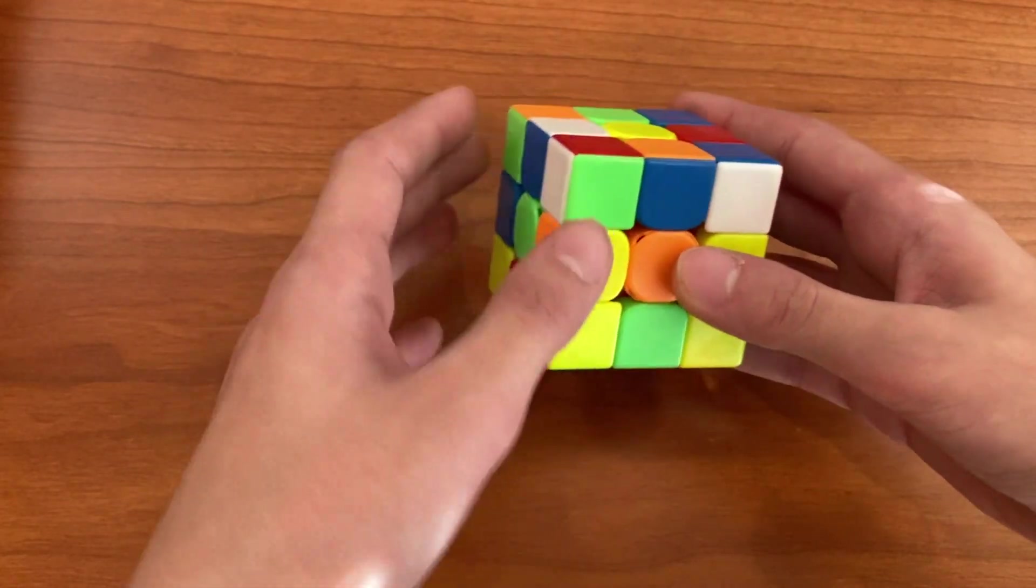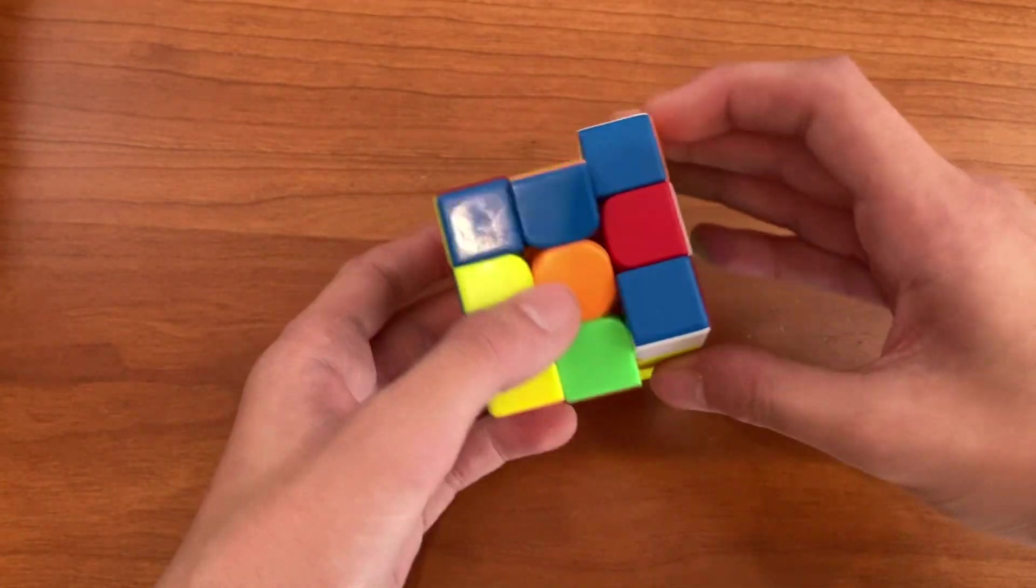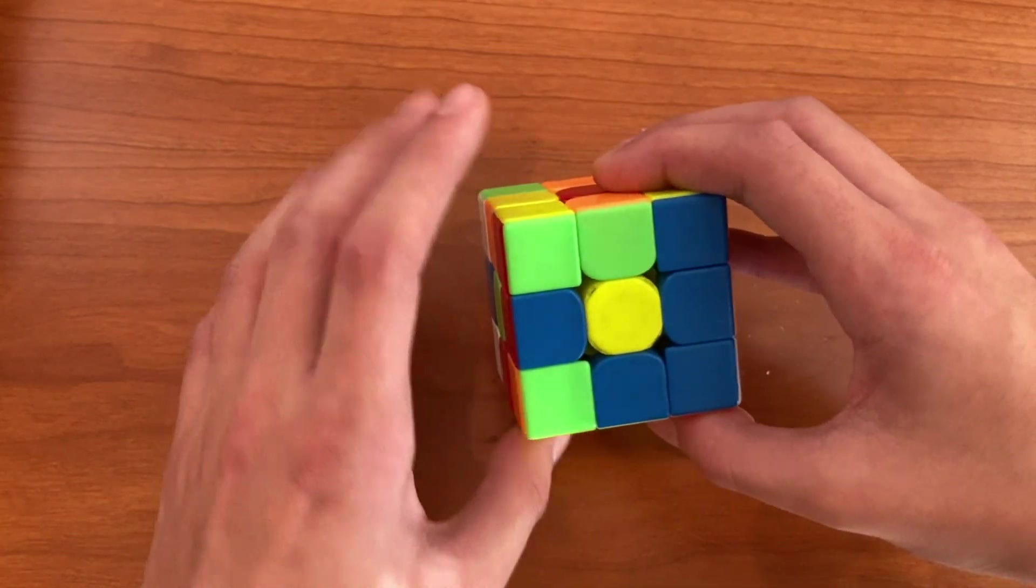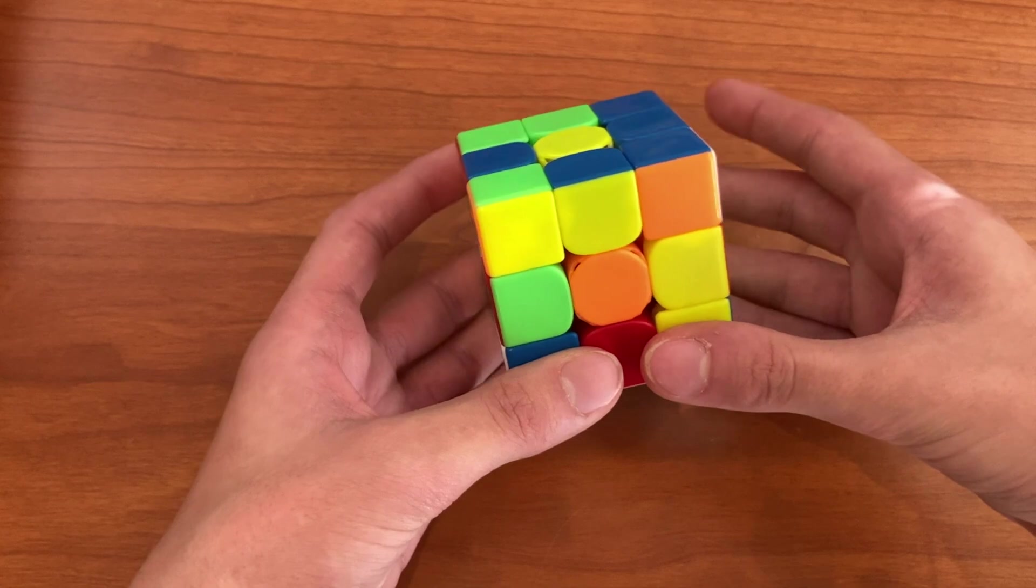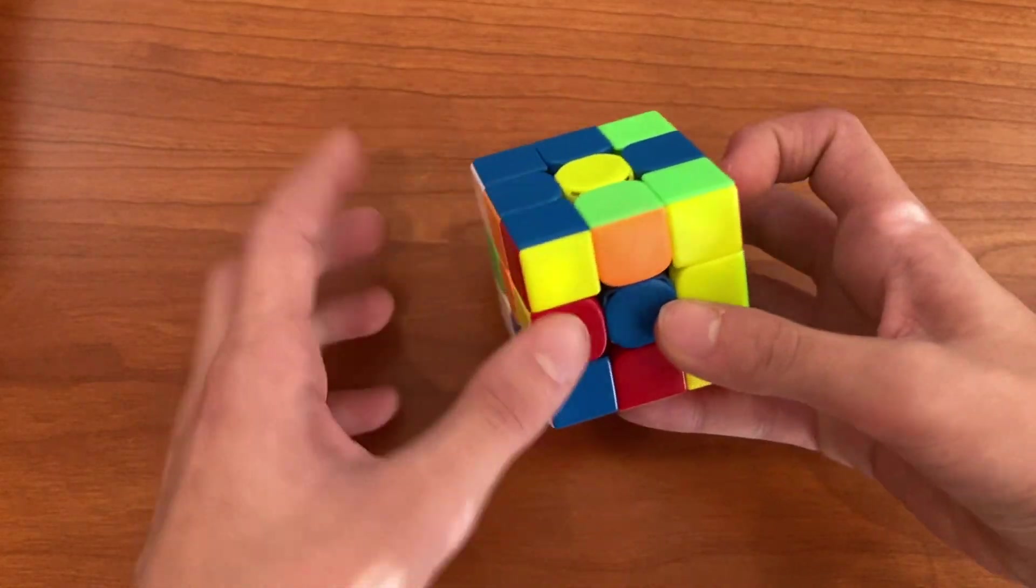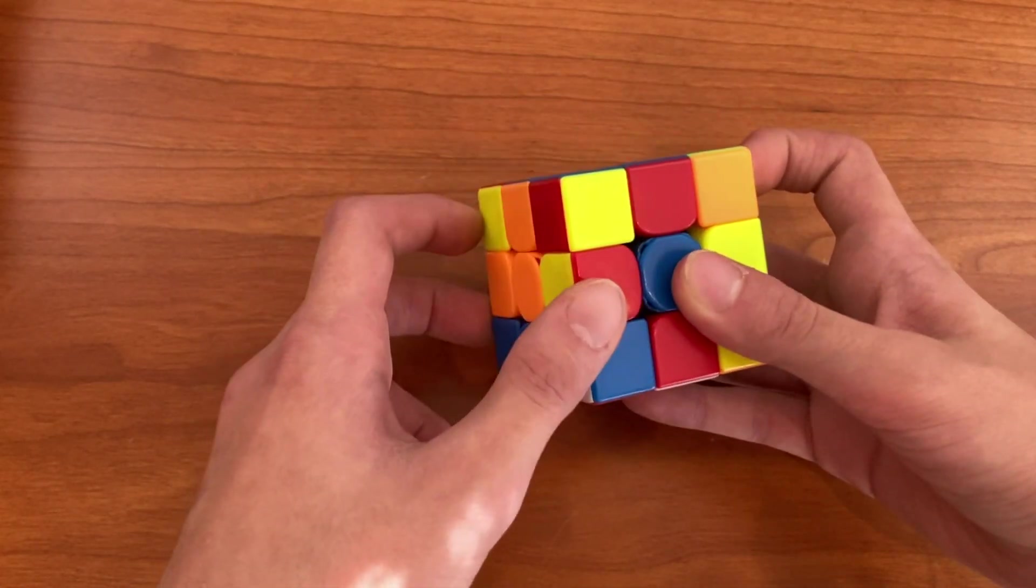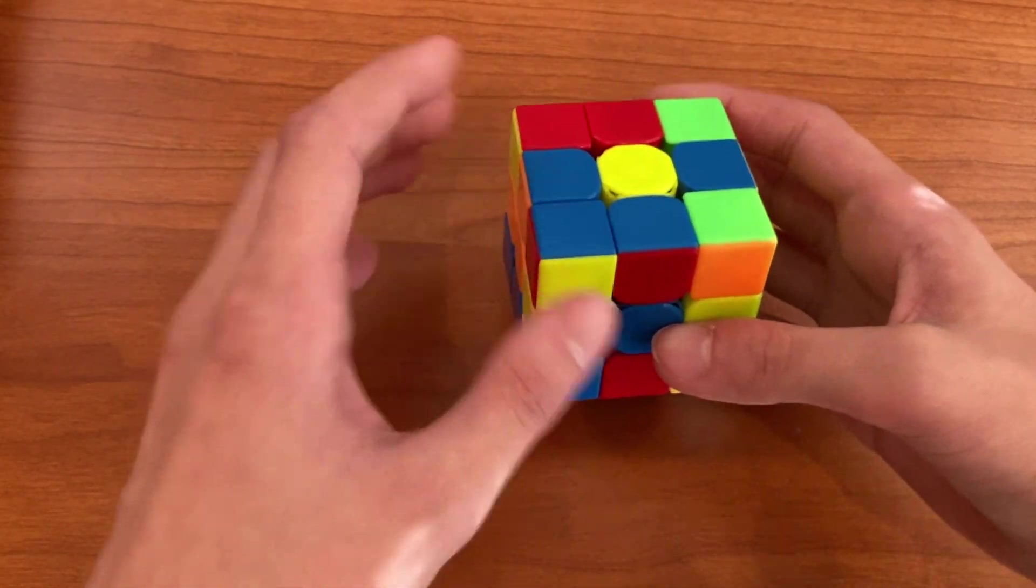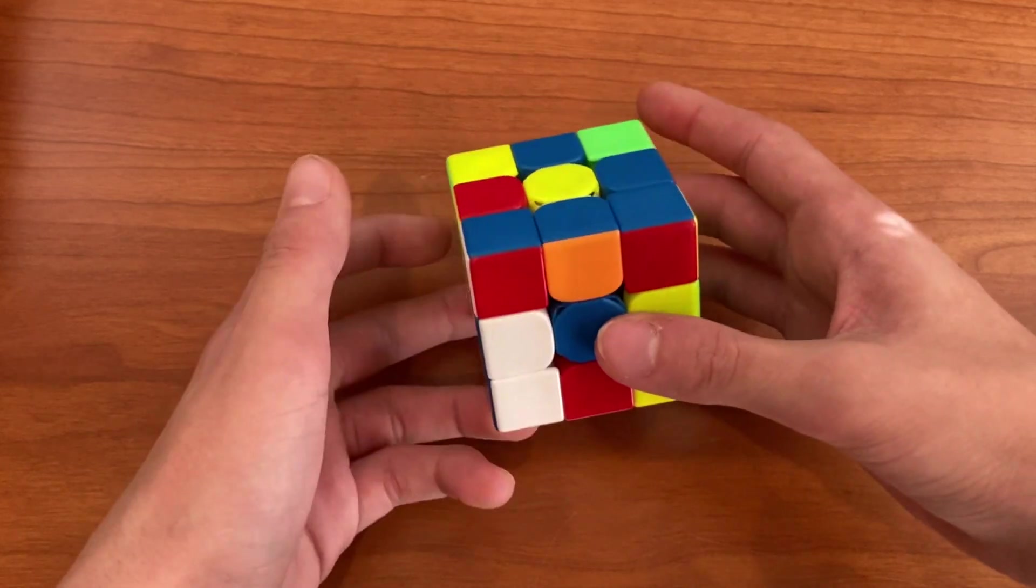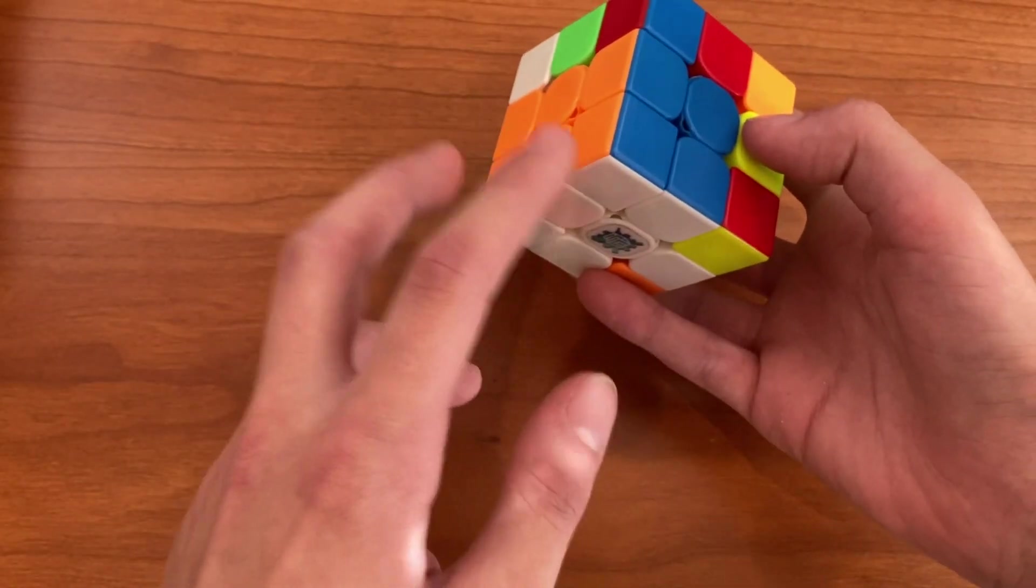Instead of putting these in two together, he brought this one down with an L2, and then just put this one in like that. And now he's going to put in this edge, but if he wanted to put it in like this, he'd have to rotate, which isn't that good. So instead he did a wide U, and then he put it in into the back like that. And then you can see, this block gets paired up, so then he inserts this edge to complete the double X-cross like this. And just like that, you have two pairs solved.